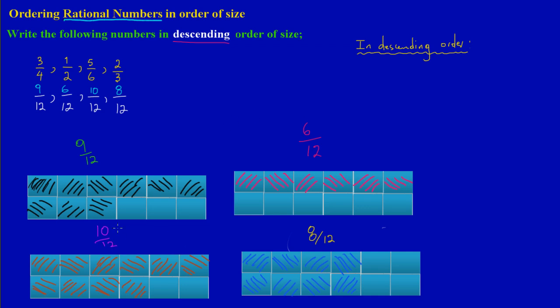So the biggest number would be 10 over 12, which is obviously 5 over 6. So that's my first number: I would have 5 over 6.